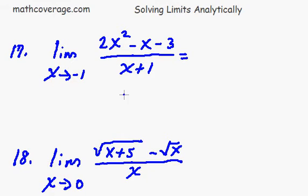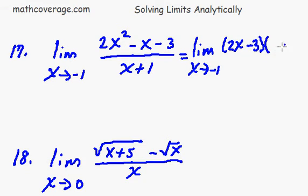And what we're going to get is we're going to rewrite the limit as x approaches negative 1. And so we factor the top, and we can factor this as 2x minus 3 and x plus 1.